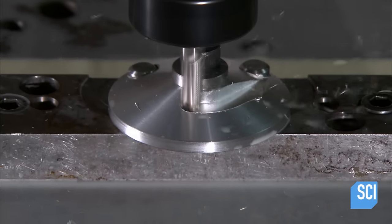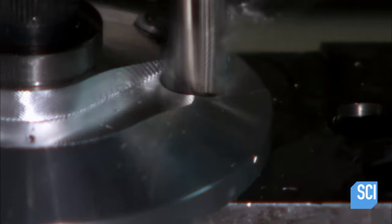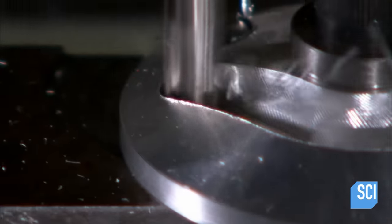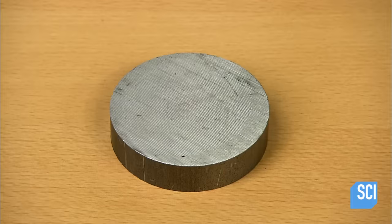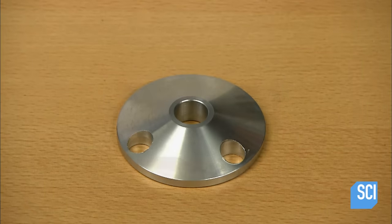Finally, they cut a triangle out of the circle. This takes the part to its final shape and weight. From a flat disc to a precisely crafted counterweight.